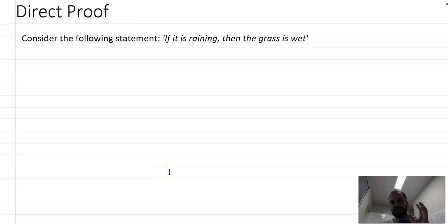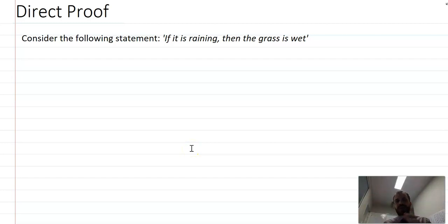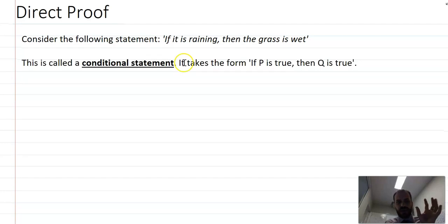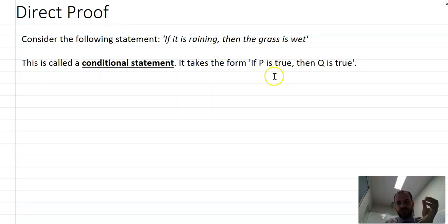So the statement is if it is raining then the grass is wet. Let's say the grass we're out on the oval, there's no cover. If it is raining then the grass is wet. This is what we call a conditional statement and it takes a very particular form: if P is true then Q is true.